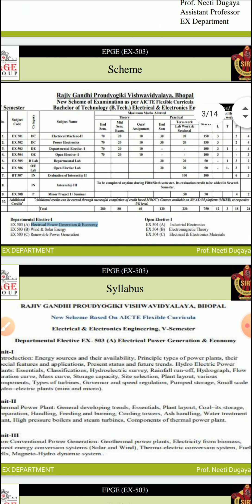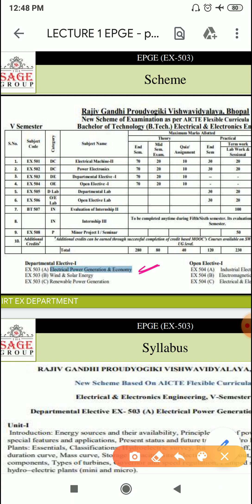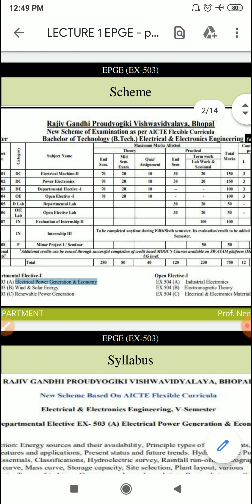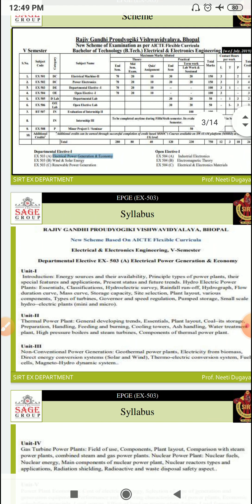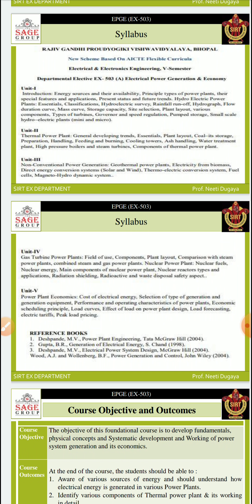EX503 is a Departmental Elective One. There are three electives available and we have selected EX503A, that is Electrical Power Generation and Economy. The subject carries 70 marks in the end semester exam, 20 marks in midsem, and 10 marks for quiz and assignment. There is no practical laboratory for this subject. Now let's look at the syllabus, which has five units.